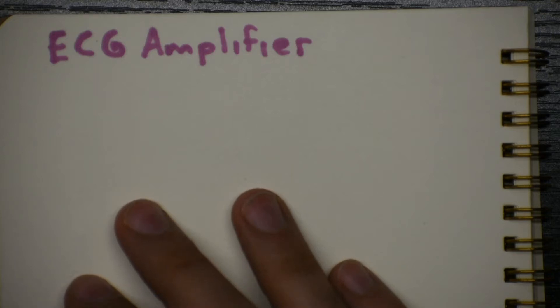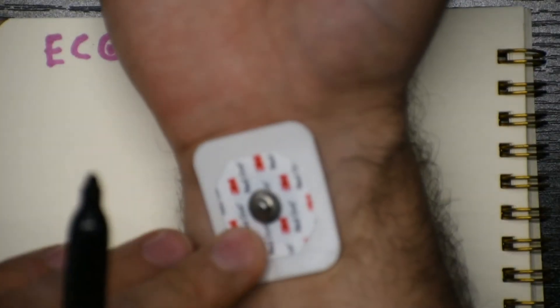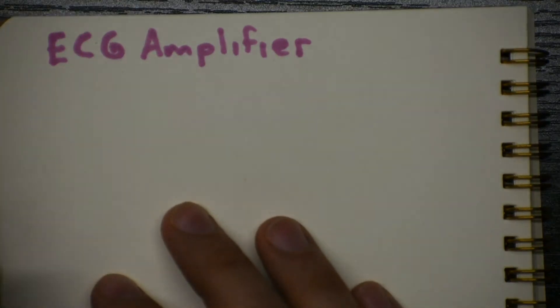Two labs ago we looked at the pulse of our heartbeat using light reflected from our finger onto a phototransistor. Today let's instead use electrodes that we put on our wrists to pick up the voltage that comes from our heart that echoes throughout our body and amplify that to see maybe some more interesting shapes to the waveform that happens every time our heart beats.